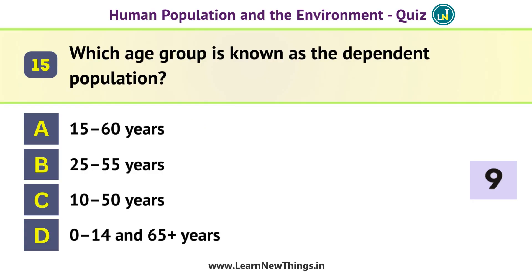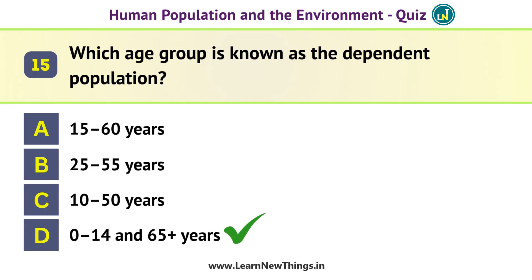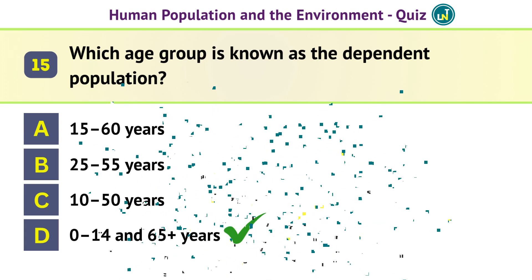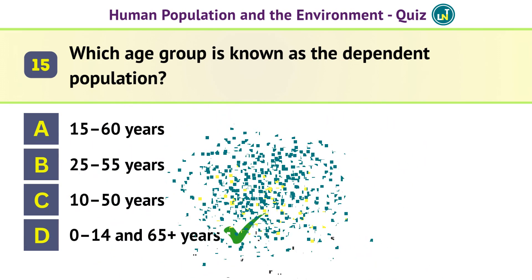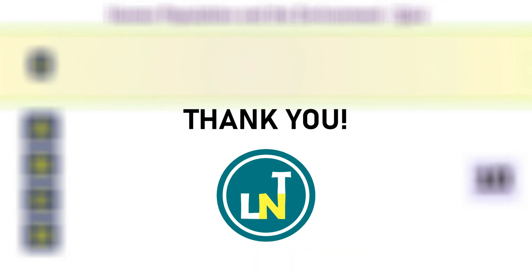Which age group is known as the dependent population? 0 to 14 and 65 plus years.